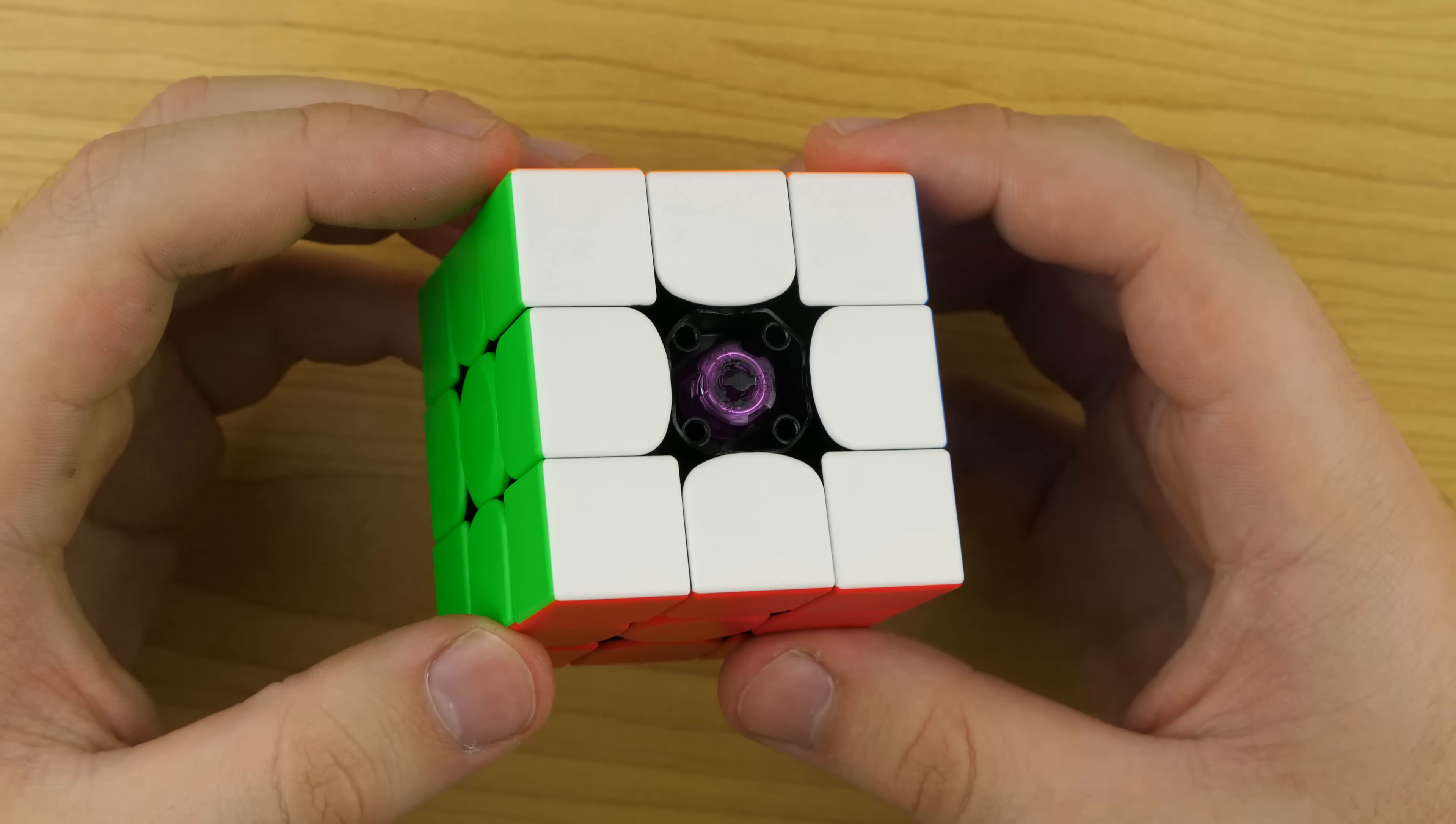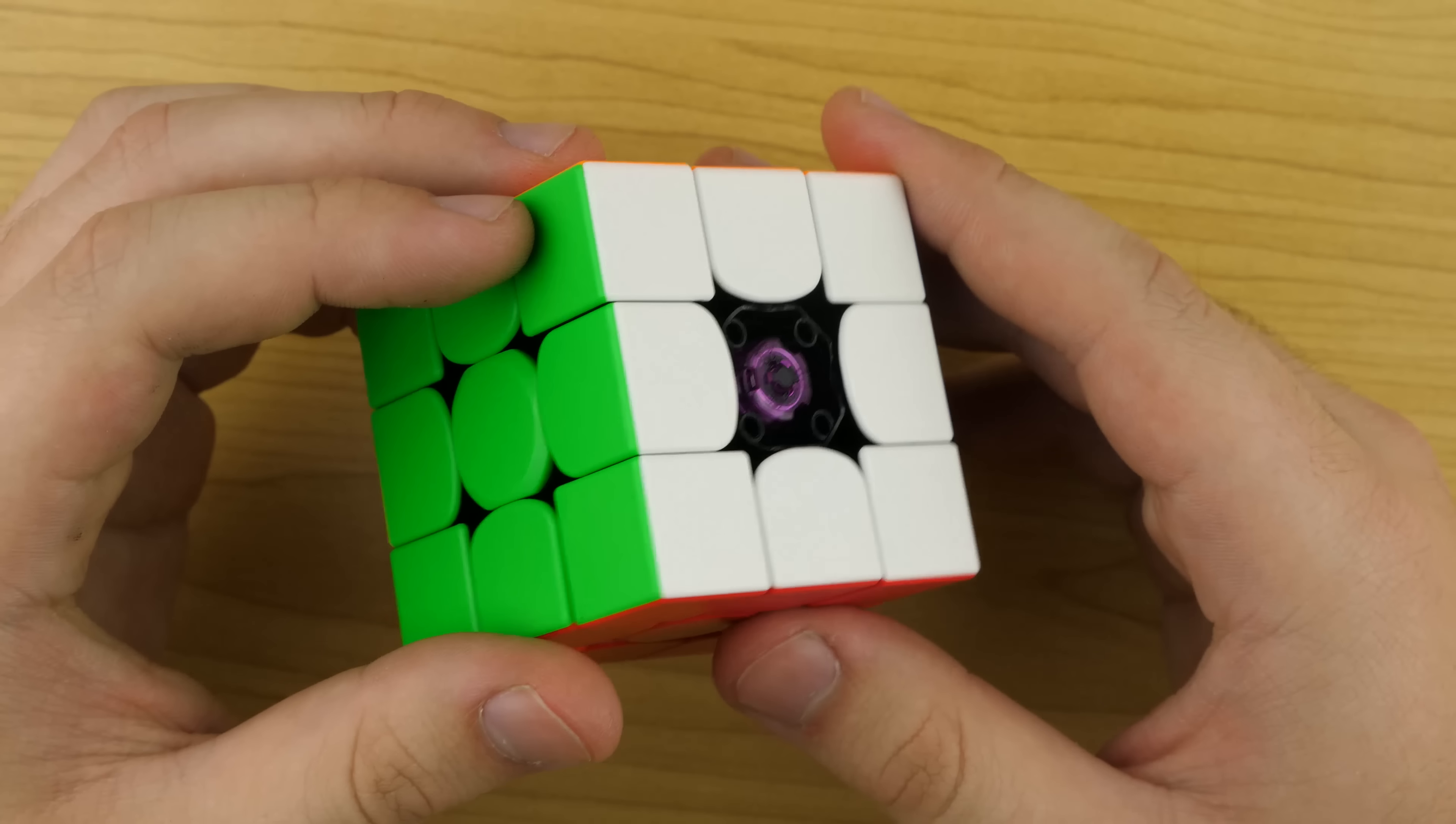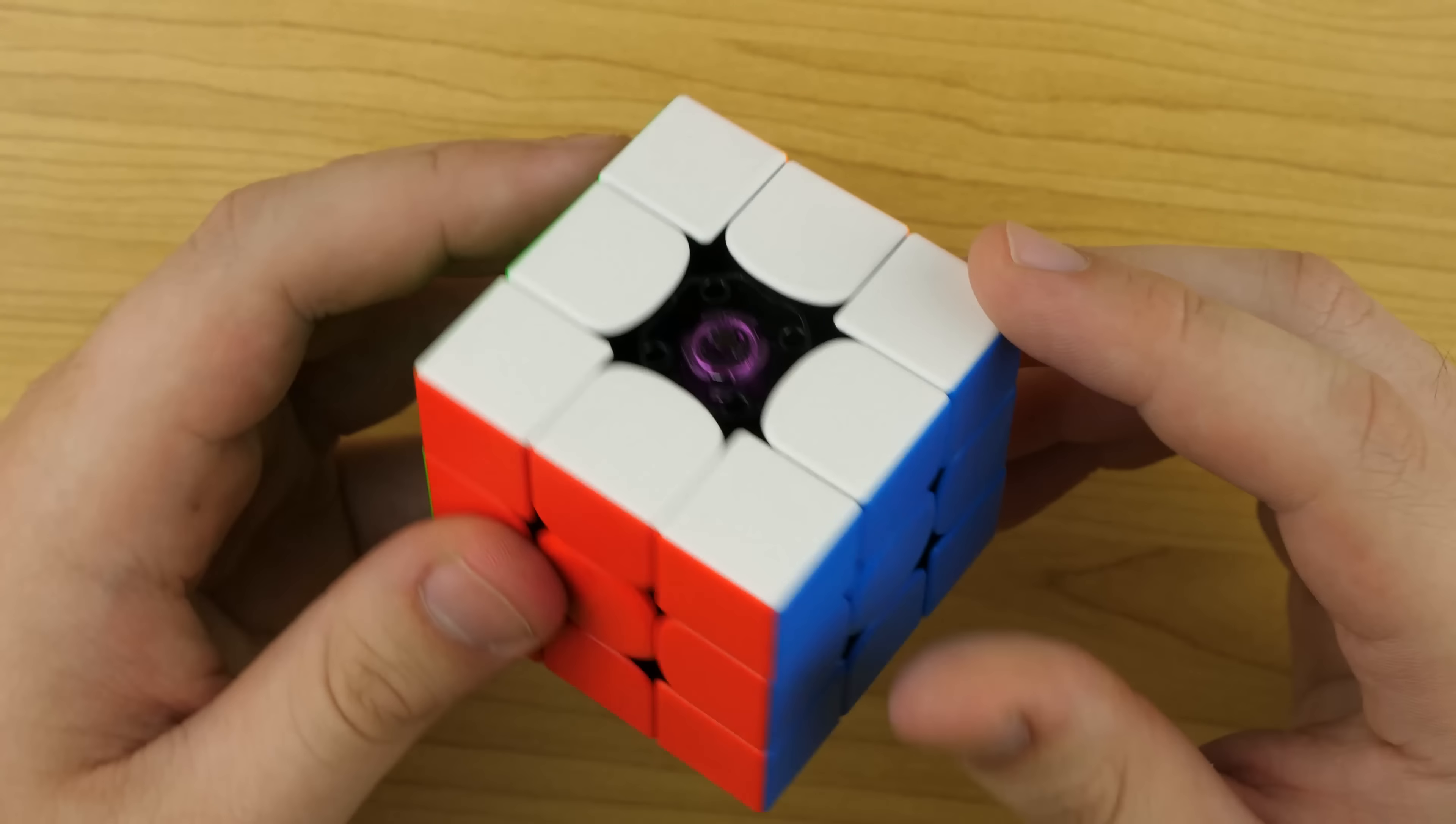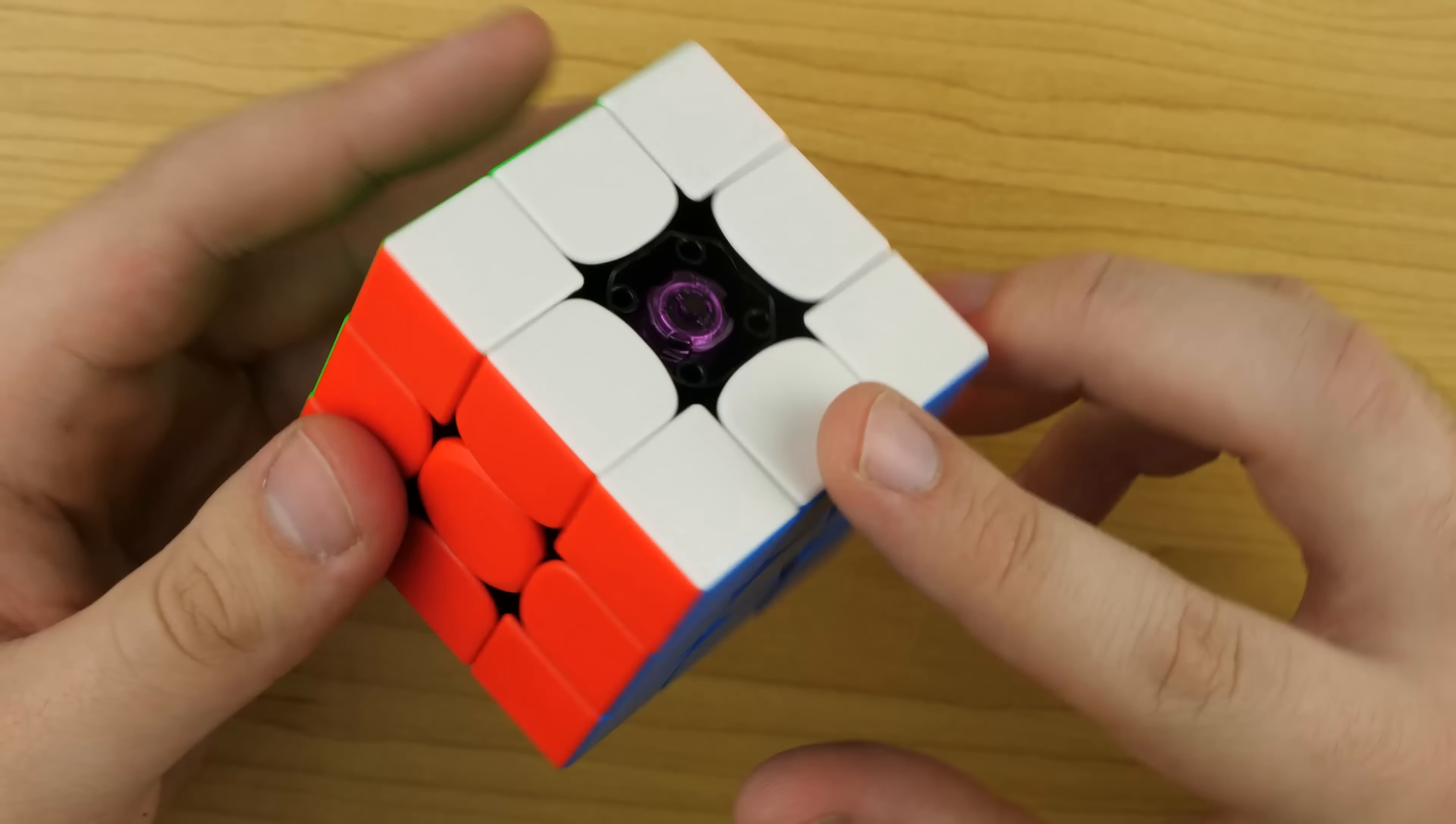Okay, I'm not sure how well that's showing up on camera, but essentially the tensioning system only gives you two different elasticities of adjustment. You have the 0.8 setting and then the 0.6 setting. I'm not a huge fan of only having two options. I don't think that was a smart move from GAN.